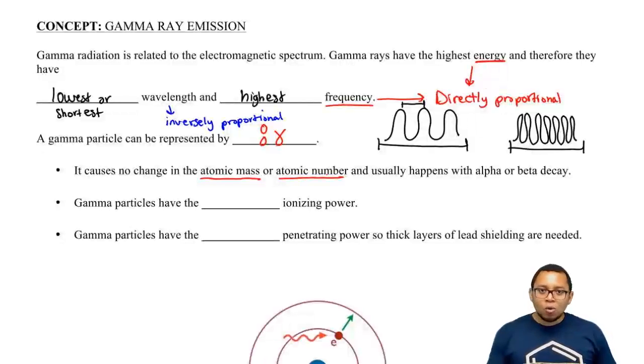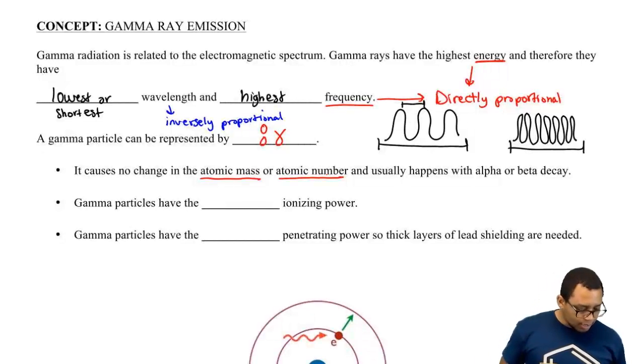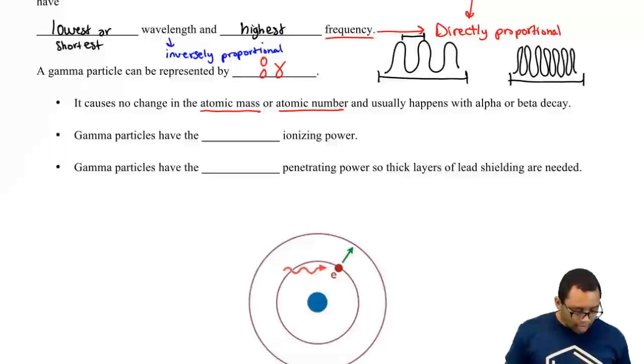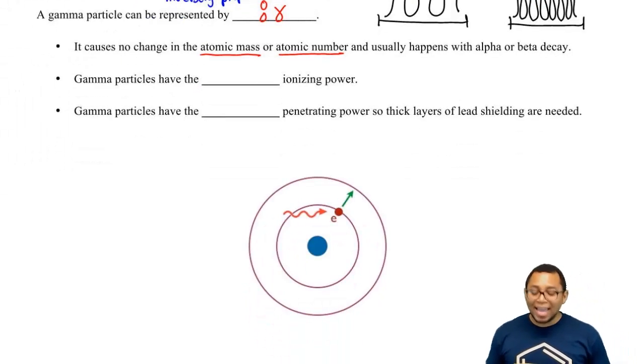Because of that, we usually see it happening with alpha decay or beta decay. What's the purpose of gamma emission then? When it comes to gamma emission, it has to do with the absorption of energy.